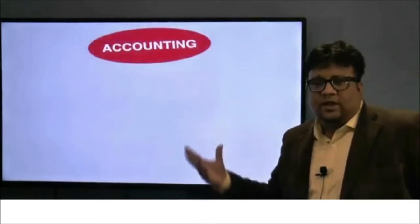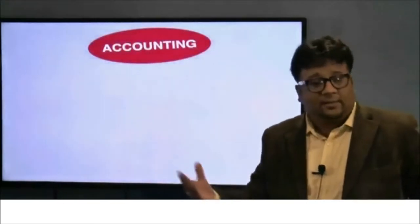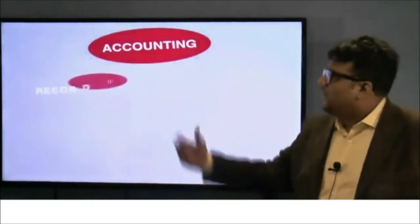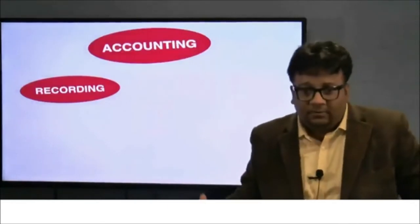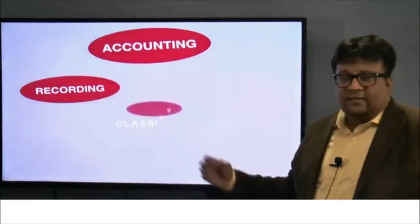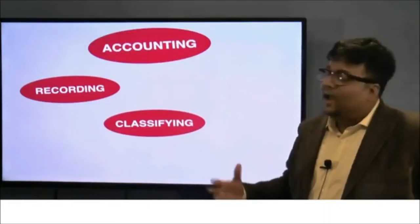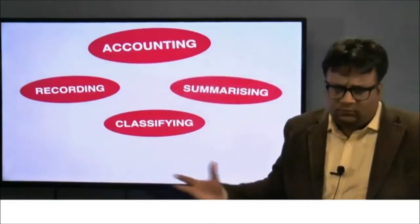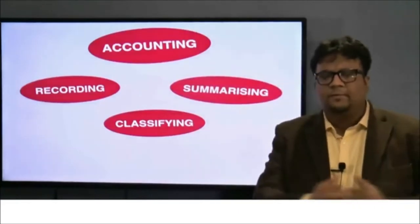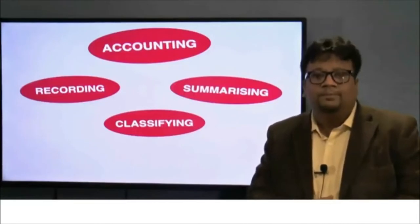In financial accounting, we saw that the definition of accounting was: accounting is an art of recording, classifying, and summarizing. Recording was done by passing journal entries or subsidiary books. After that, classifying was nothing but ledger posting. And at the end we used to do summarizing - what was summarizing? Final accounts. Whatever journal, ledger, whatever bookkeeping process we had done, that was summarized. This is what we used to do.